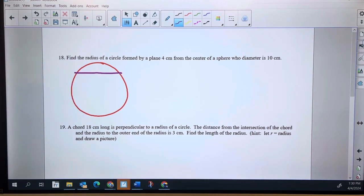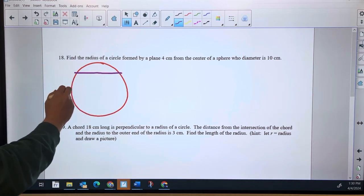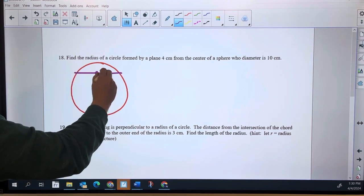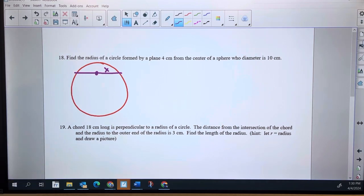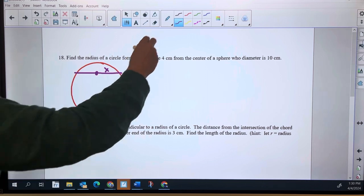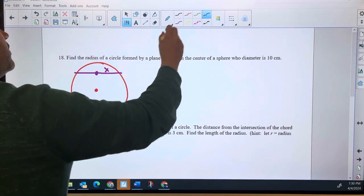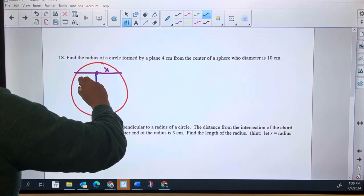Remember if we cut the top off and then looked at it we would see a circle right there. So I'm trying to find the radius of that circle, so really I want to find half of that purple line right there. Let's call that X. Four centimeters from the center, so this is the center of the sphere and that distance right there is four.